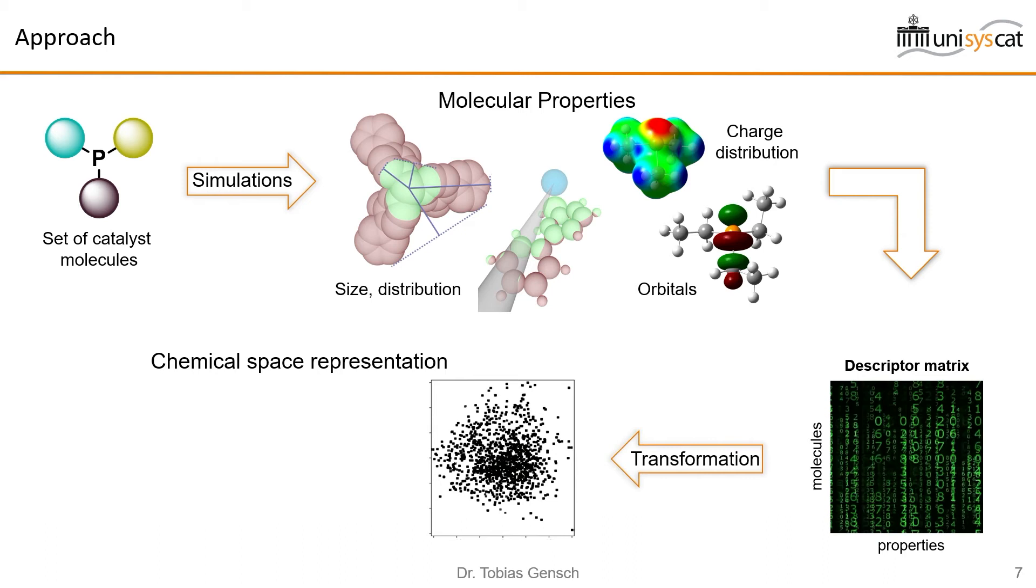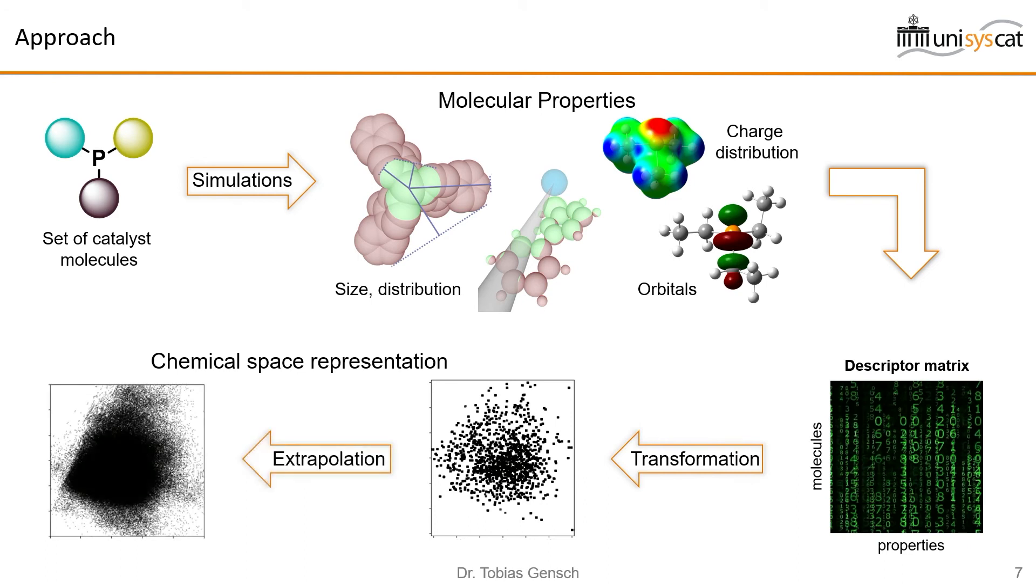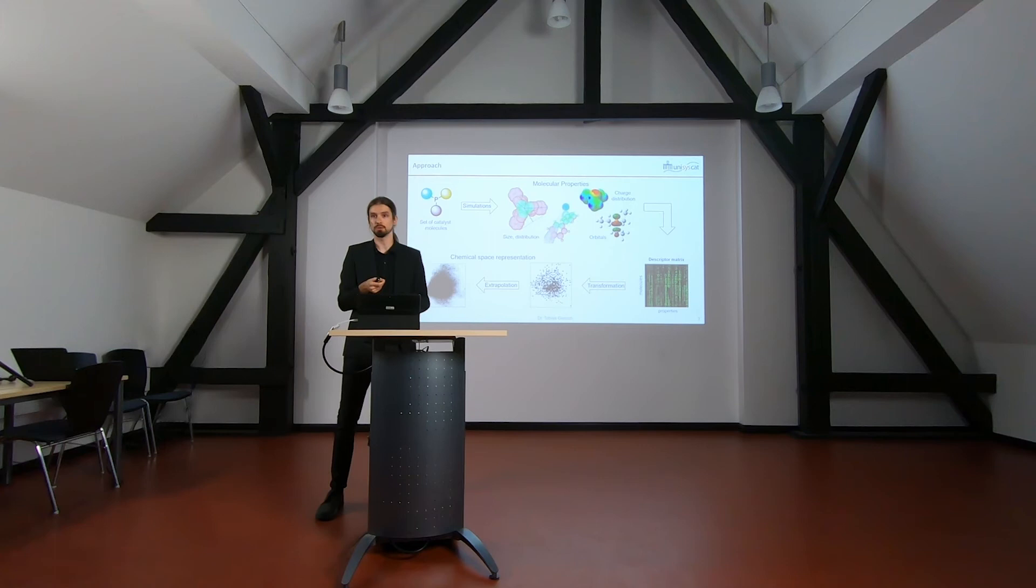Although we've started from a data set maybe a dozen or so samples large, in our chemical space representation we end up with a lot more data. That means we can employ more advanced machine learning algorithms that learn how the molecular structure links each molecule to its place in this chemical space and we can extrapolate for any structure that we can think of and really populate this chemical space much more densely, easily with a million estimated samples.